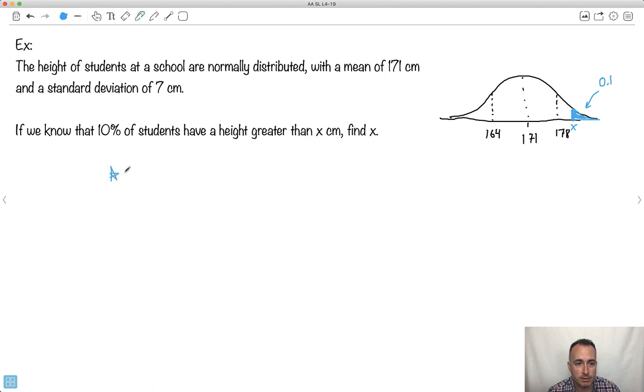But remember, inverse normal is only for area to the left. Is this an area to the left that I know? Nope. I cannot give my calculator this, or else it'll give me the x value for which the area below it is 10%. Now, if you used symmetry, you could actually figure that out. But let's make it a little bit more clear here. So what I'm going to do is say, well, I know that this area is 0.1, but that means that this area to the left then must be, what's this area then?